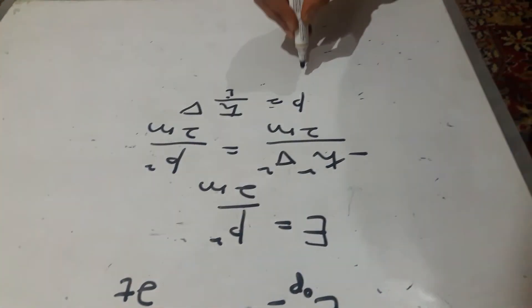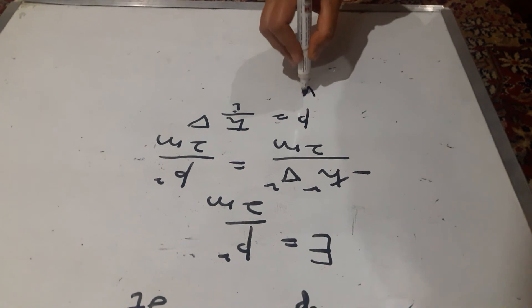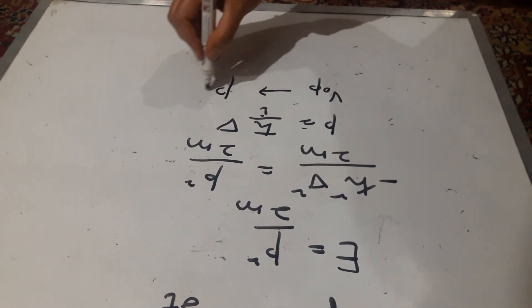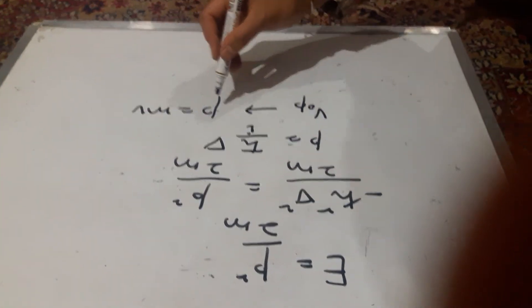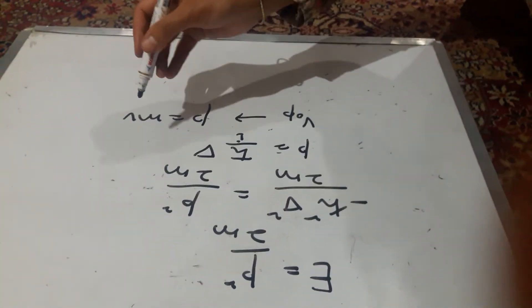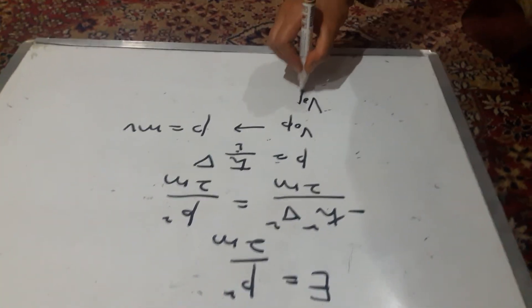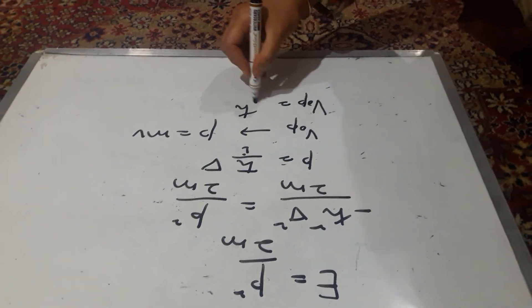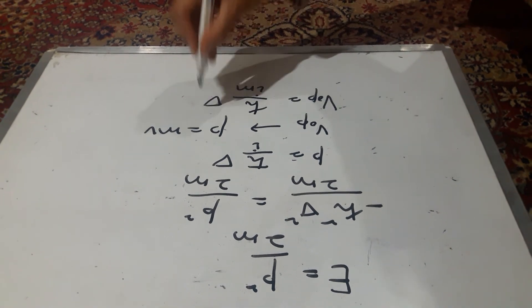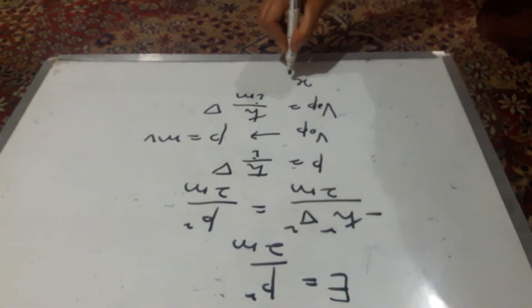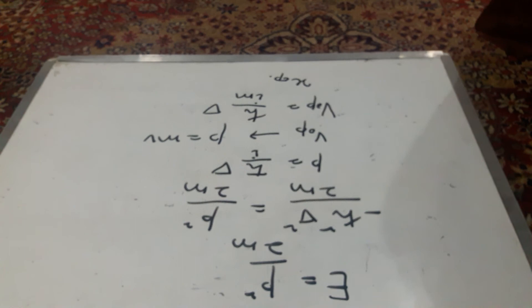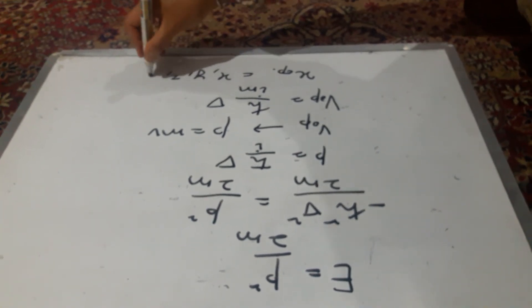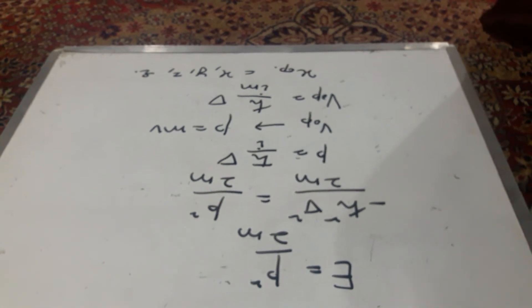Similarly, the operator for velocity, vop, can be evaluated from p equal to mv. That means v is equal to p by m. So velocity operators are written as h cross, we have to simply divide this expression by m. For position, operators are written as such: x operator is equal to x, y, z or r. That's all.